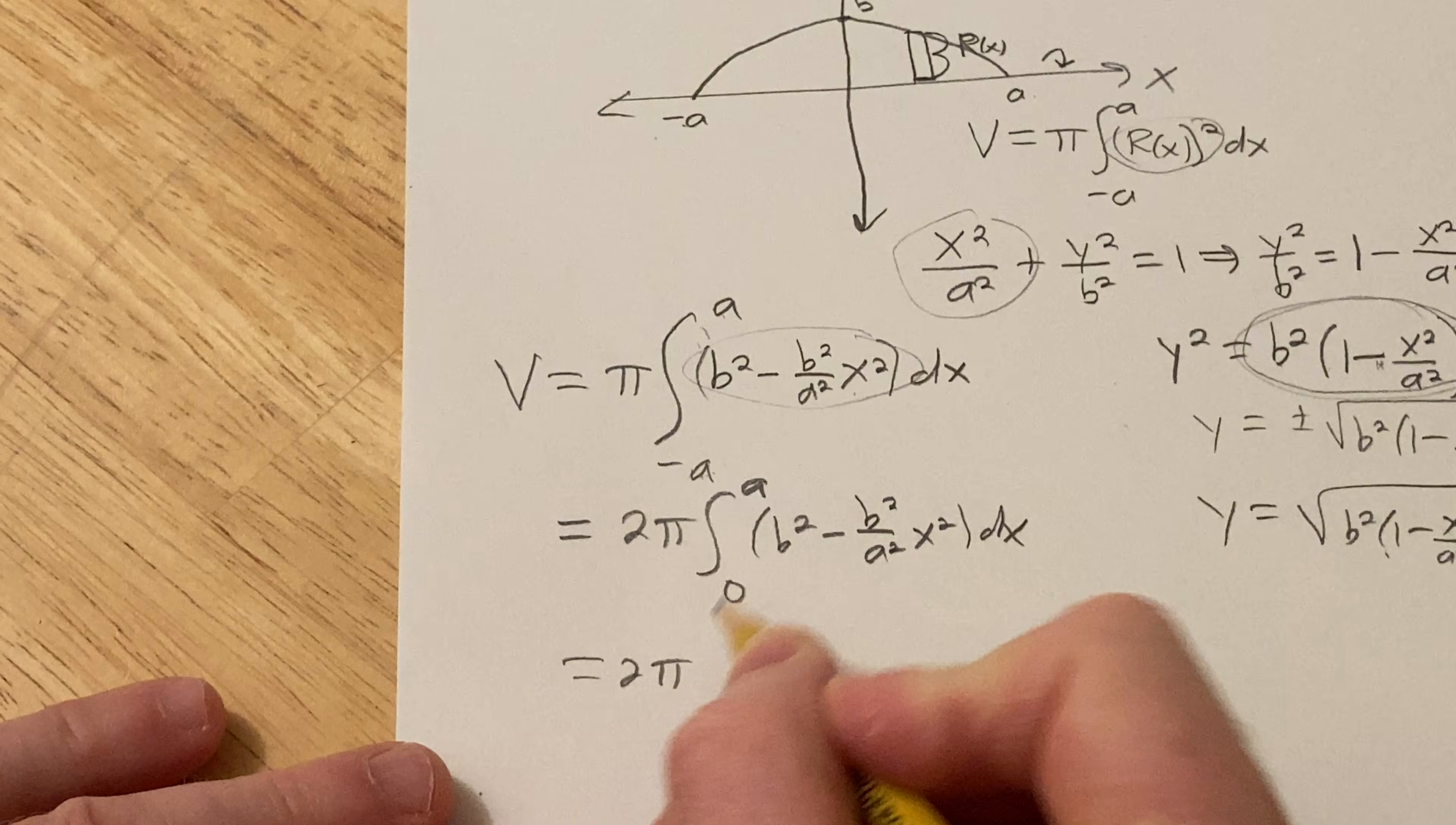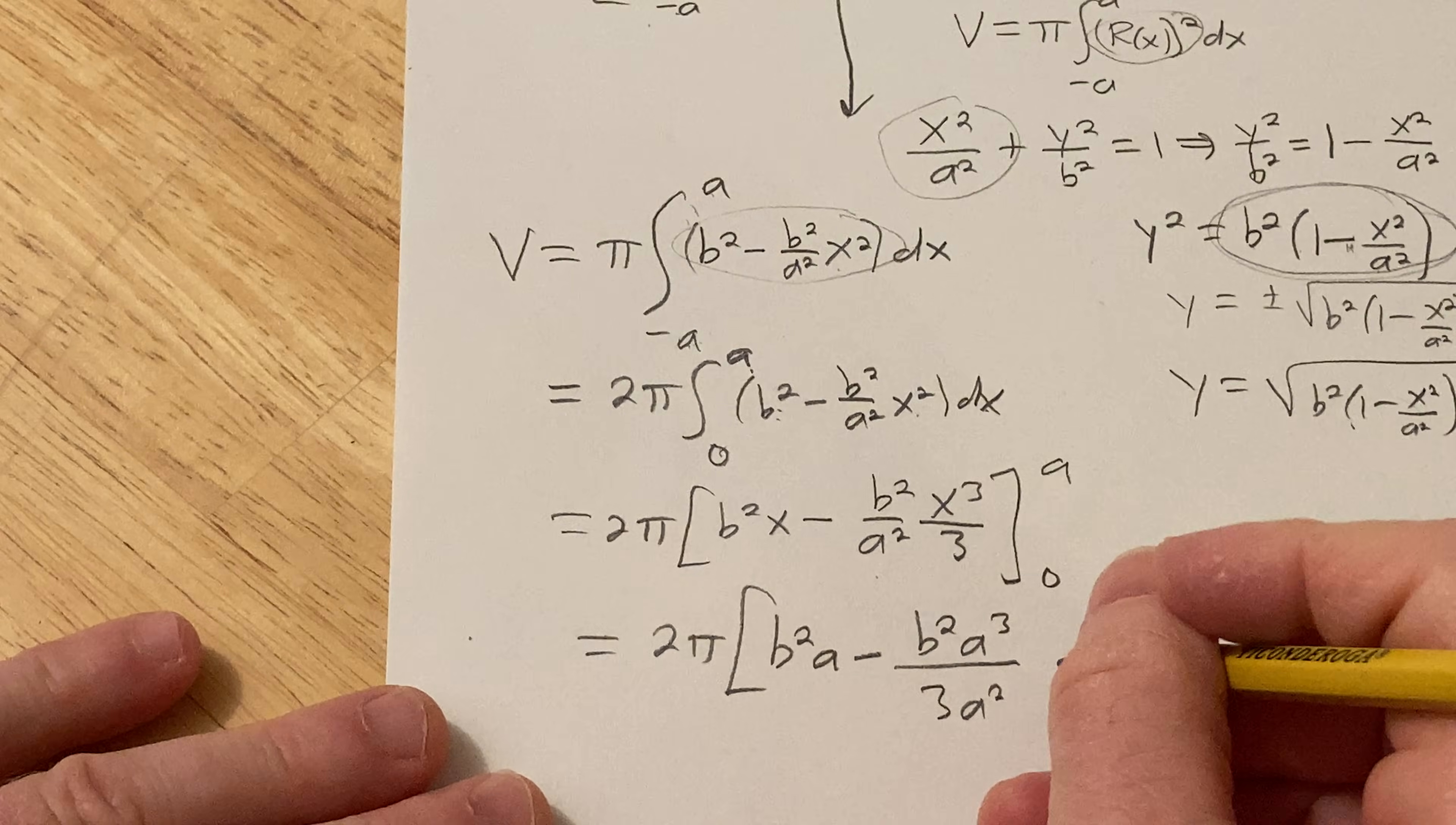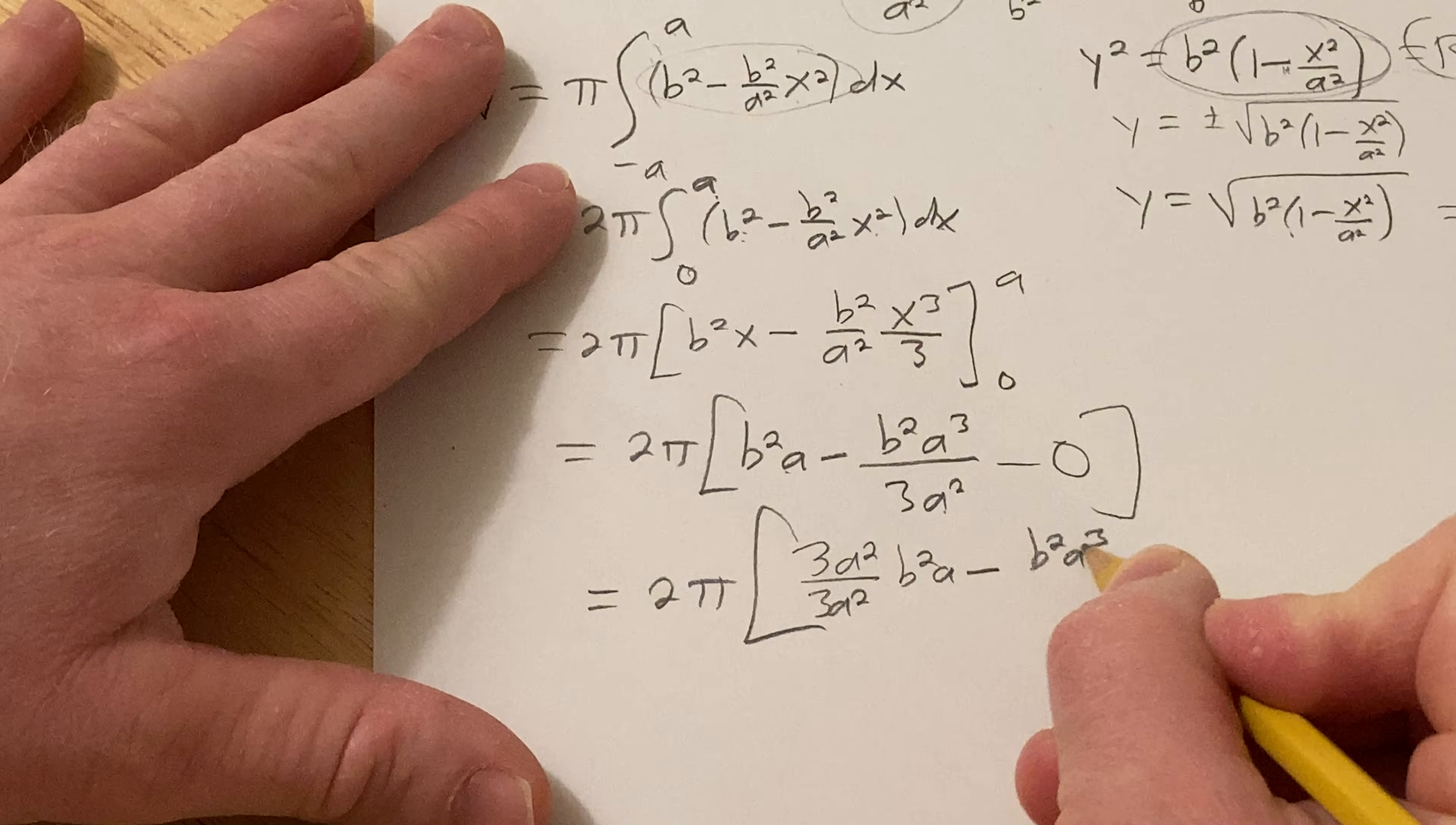All right, let's integrate. This is two pi. This is a constant. So when you integrate with respect to x, it's just going to be b squared x. Here you use the power rule. So minus b squared over a squared x cubed over three. We're going from zero to a. Okay, and we plug in the a first. So it'll be two pi b squared a minus b squared a cubed over a squared, 3a squared. And then minus plug in the zero, it all goes away because you have x's here.